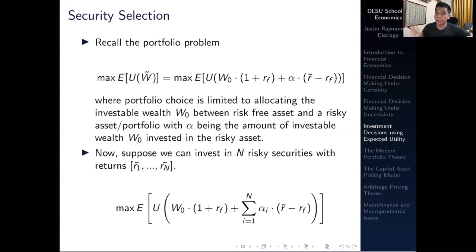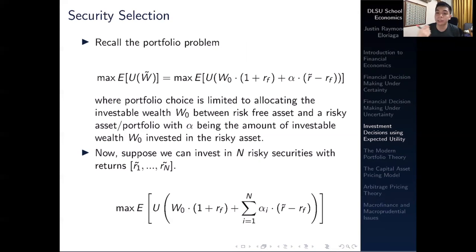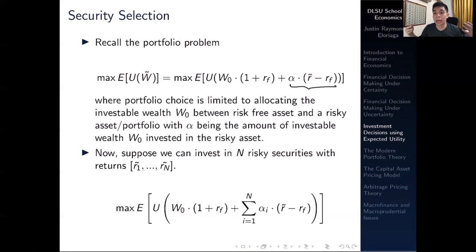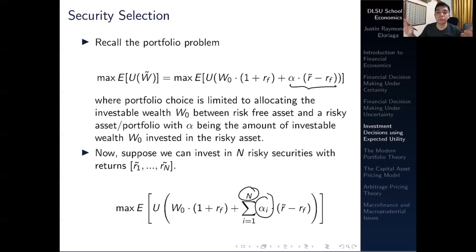Suppose that you can invest in N risky securities with varying returns. For example, security one has this rate of return, Apple stock has this rate of return, Google stock has this, Tesla has this, and so on. What we do is modify the formula by saying that alpha — the amount you invest in risky securities — is now split across multiple risky securities. Alpha_i is the amount you invest in a particular security i, summed across all N securities, times the expected rate of return less the risk-free rate.